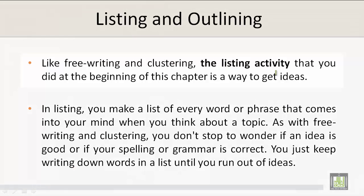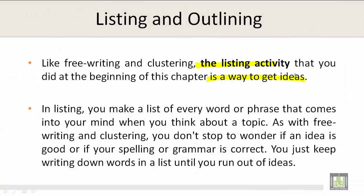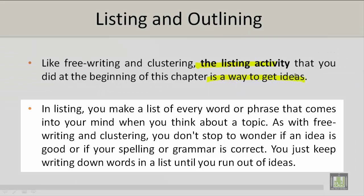Listing and outlining. Like free writing and clustering, the listing activity that you did at the beginning of this chapter is a way to get ideas. In listing, you make a list of every word or phrase that comes into your mind when you think about a topic. As with free writing and clustering, you don't stop to wonder if an idea is good or if your spelling or grammar is correct. You just keep writing down words in a list until you run out of ideas.